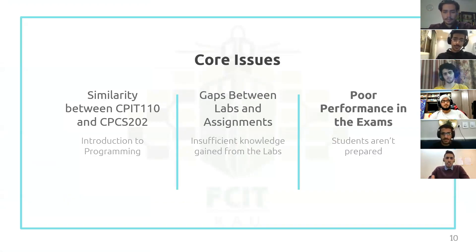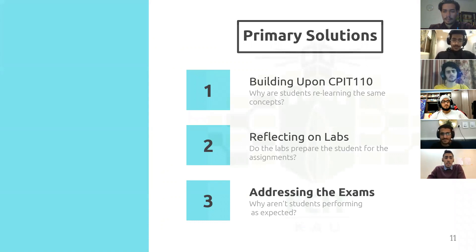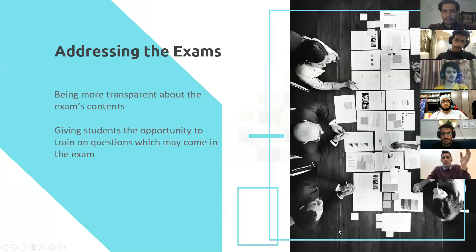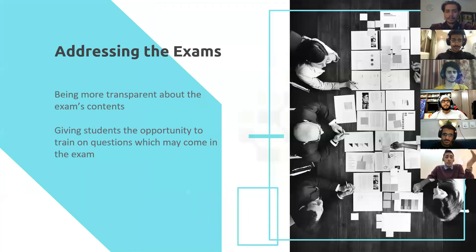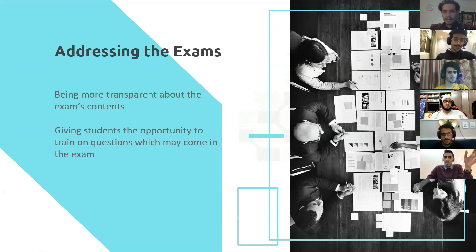One of the core identified issues is the poor performance from students. We saw on the first exam that students did poorly, which gives us a clear indicator that students are not achieving the course objectives. Students are not performing as expected. To solve this problem, we should have more transparency with students when it comes to exams. Harvard releases all their exams to the public so students can practice on previous exams to be prepared for coming exams.